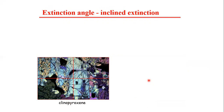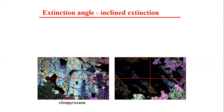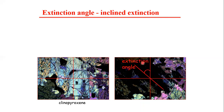Now clinopyroxene is a mineral which possesses inclined extinction. You can observe here that the lines within the clinopyroxene are parallel to the cross hair, but it is not in a position of extinction. When we rotate the stage, clinopyroxene becomes dark. But the crystallographic features are no longer parallel to the cross hair — they make an angle with the cross hair. Such extinction is then termed inclined extinction.